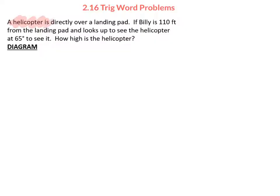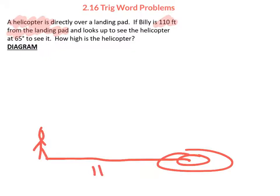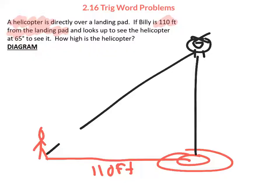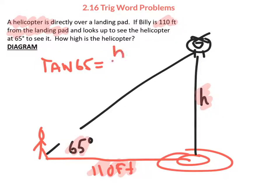Helicopter and plane questions use similar concepts — they sometimes use 'altitude' instead of 'height.' Here, the person is 110 feet from the landing pad, and the helicopter is up in the air. He looks up, which tells us that's the angle of elevation, and we want to know how high the helicopter is. Looking at the relationships: this side is opposite, this is adjacent, and since we have the angle — this is a tangent problem. The tangent of 65 degrees equals h over 110.